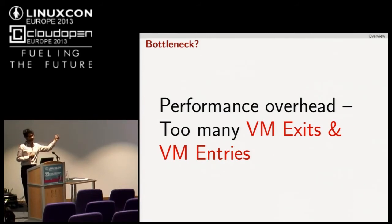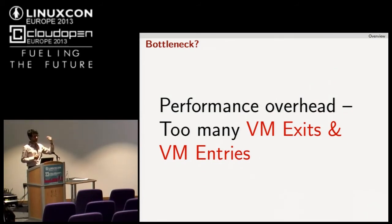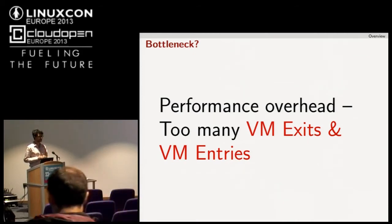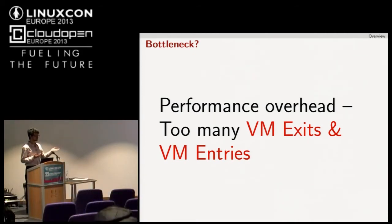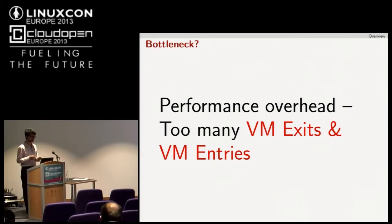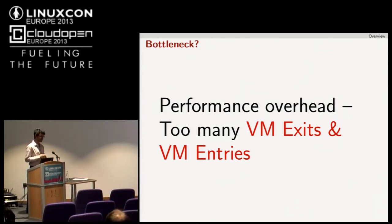When an L2 guest — a nested guest — tries to exit, a single L1-to-L2 exit can translate into multiple level-1 exits. This is termed exit multiplication.